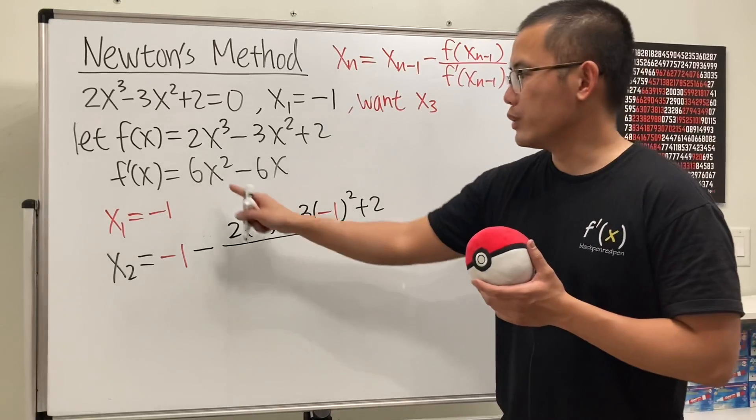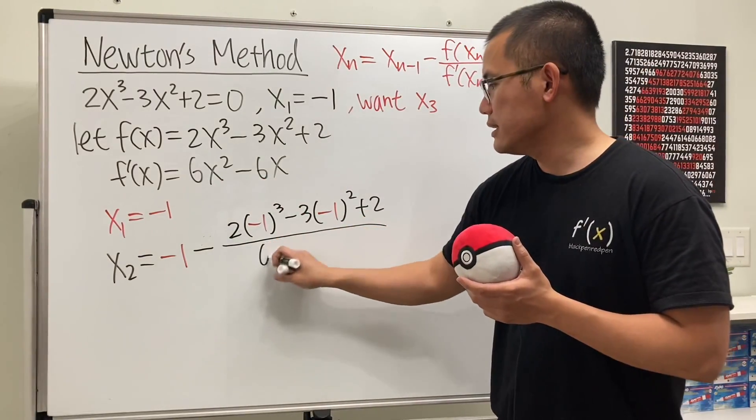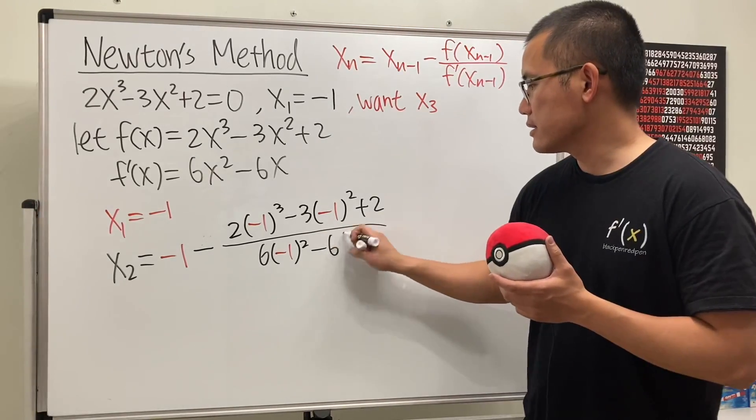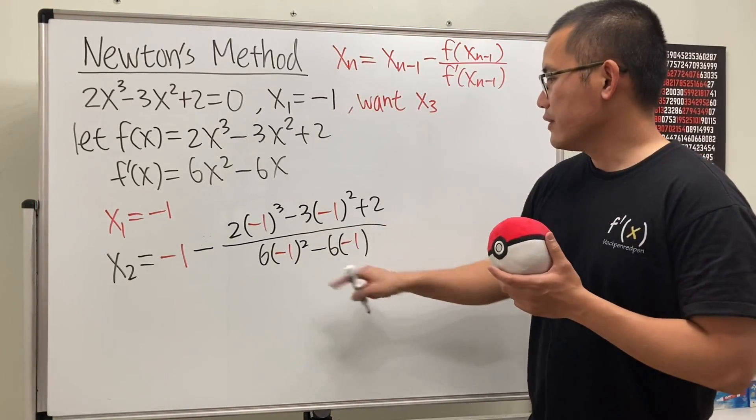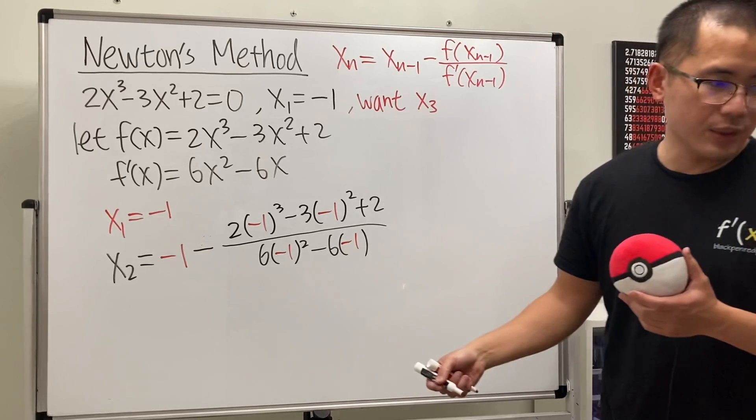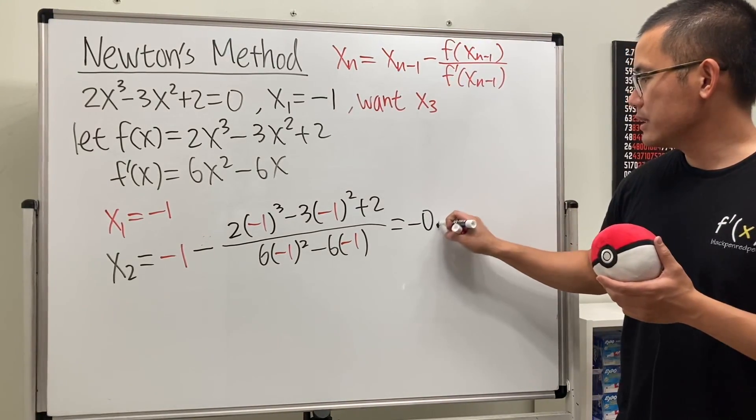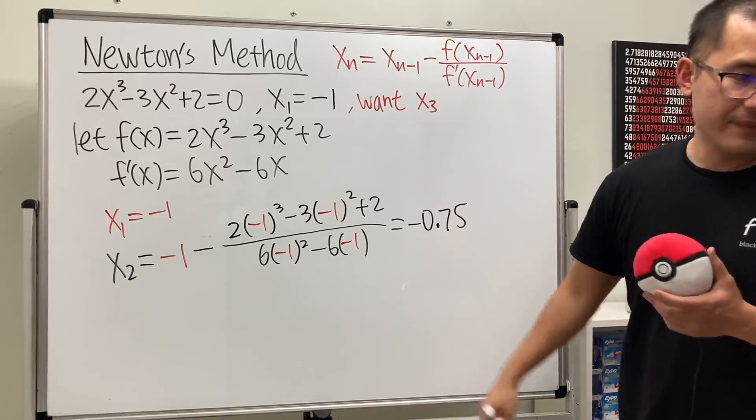Divided by, now we put negative 1 into here and here. So, we get 6 times negative 1 squared and then minus 6 times negative 1. And, of course, use the calculator to do all this and then you will end up with negative 0.75. All right?